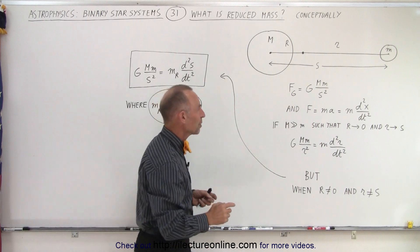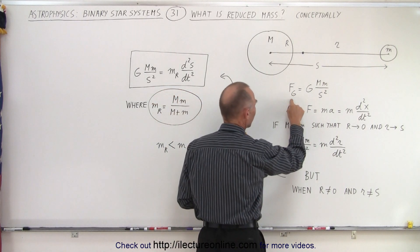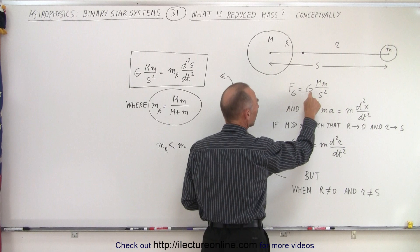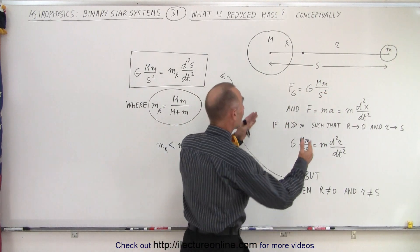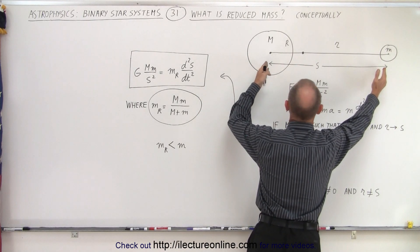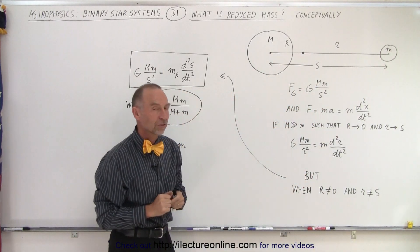Most of us are familiar with the equation where the force of gravity equals the gravitational constant times the product of the two masses divided by the distance between them squared. You notice that s here is used for the distance between the two center of masses of the two objects.